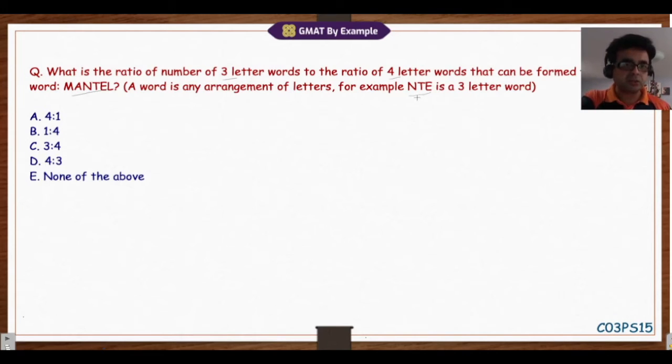Another thing to note, which is not explicitly given but can be assumed, is NTE and NET are two different letters. Similarly, TEN is different, which implies arrangement matters. So what does that mean? When arrangement matters, we apply the permutation formula.